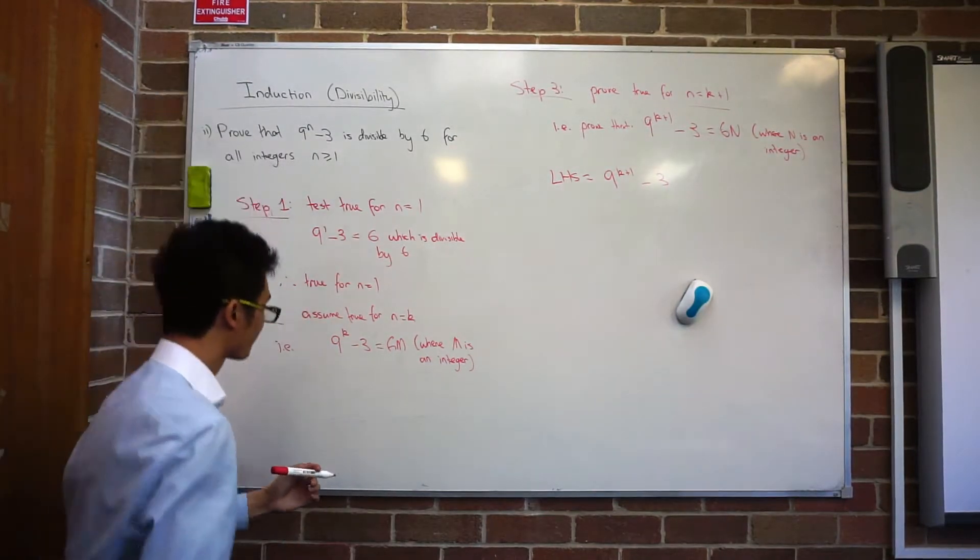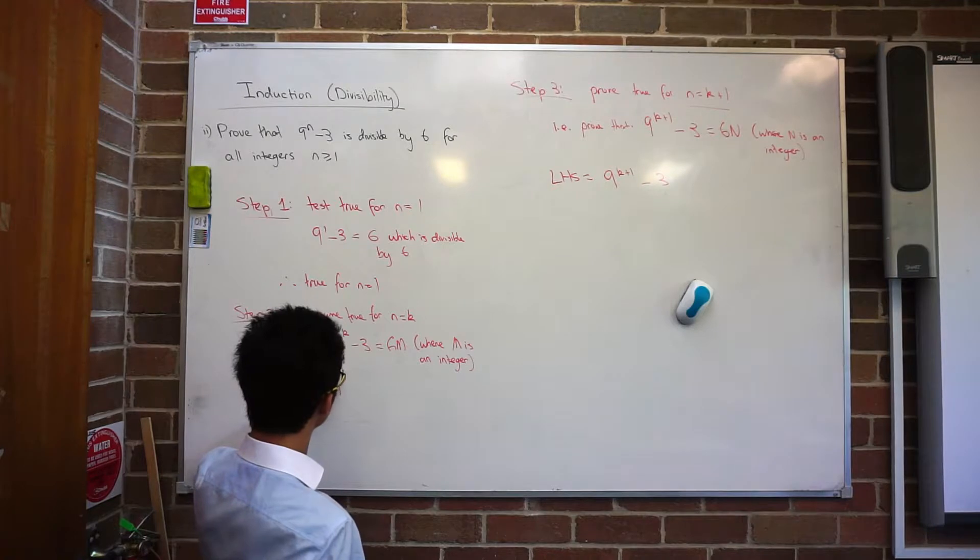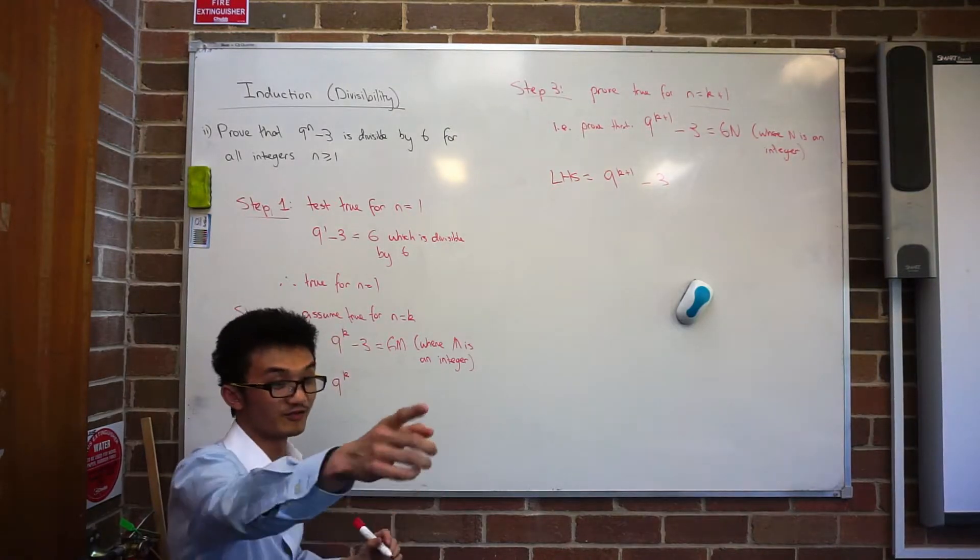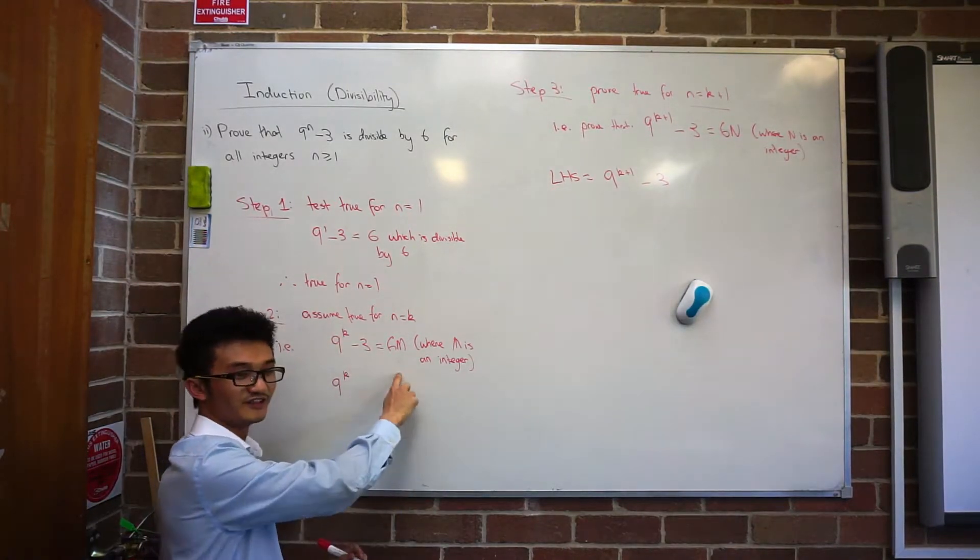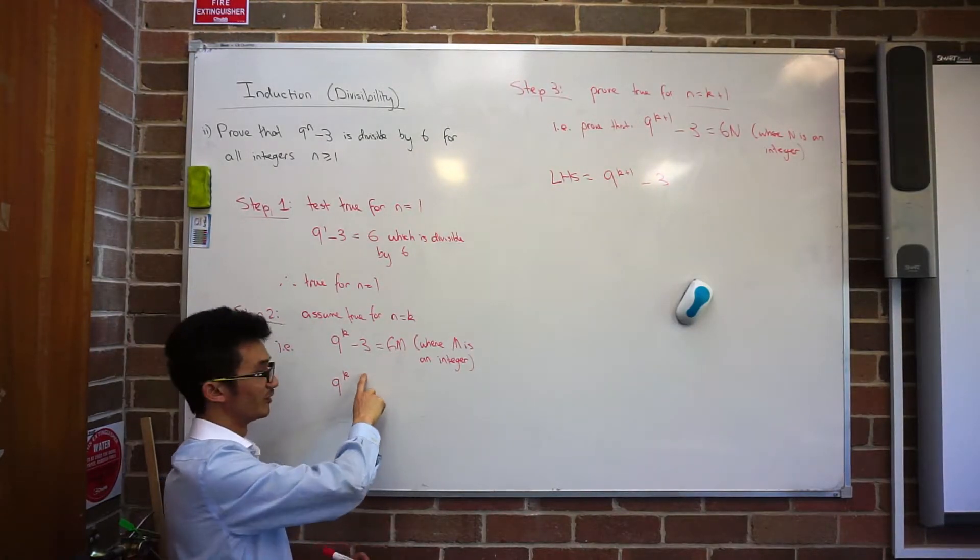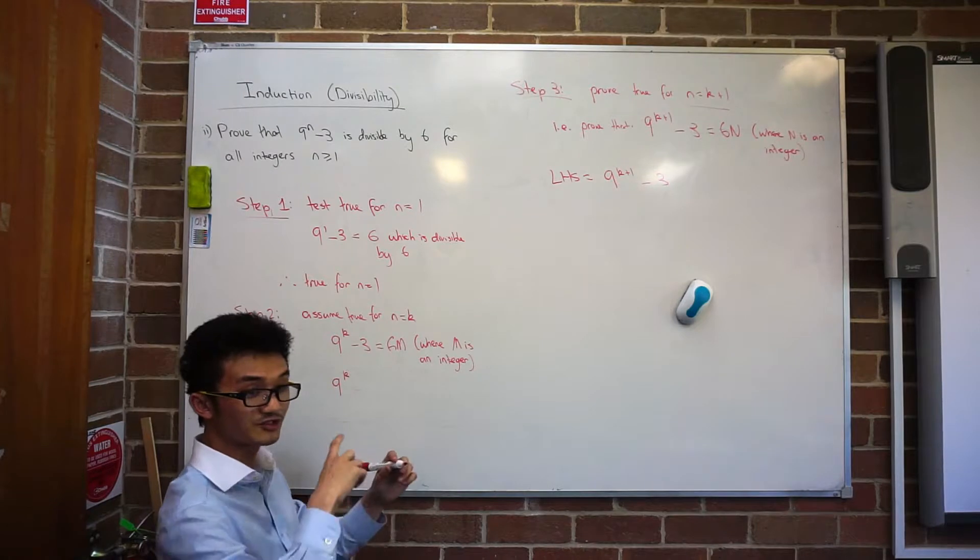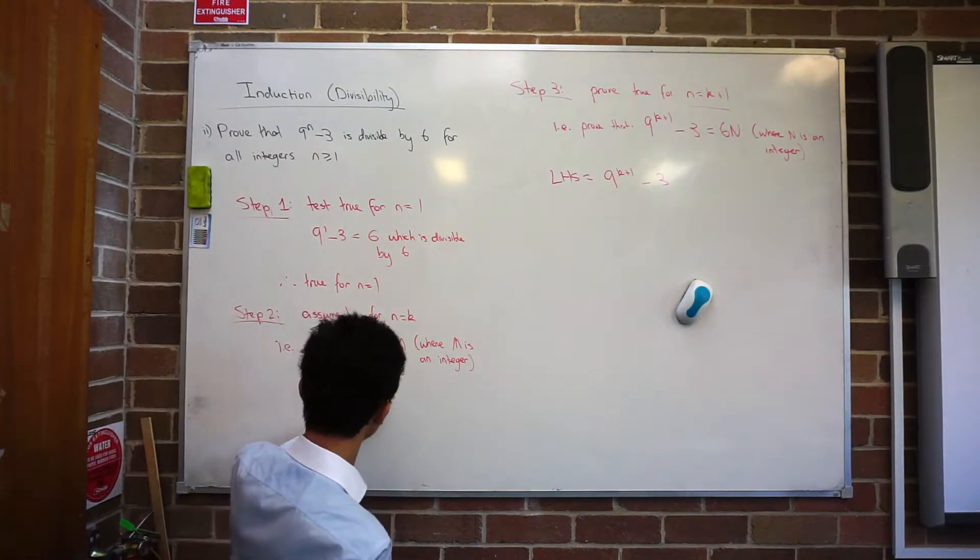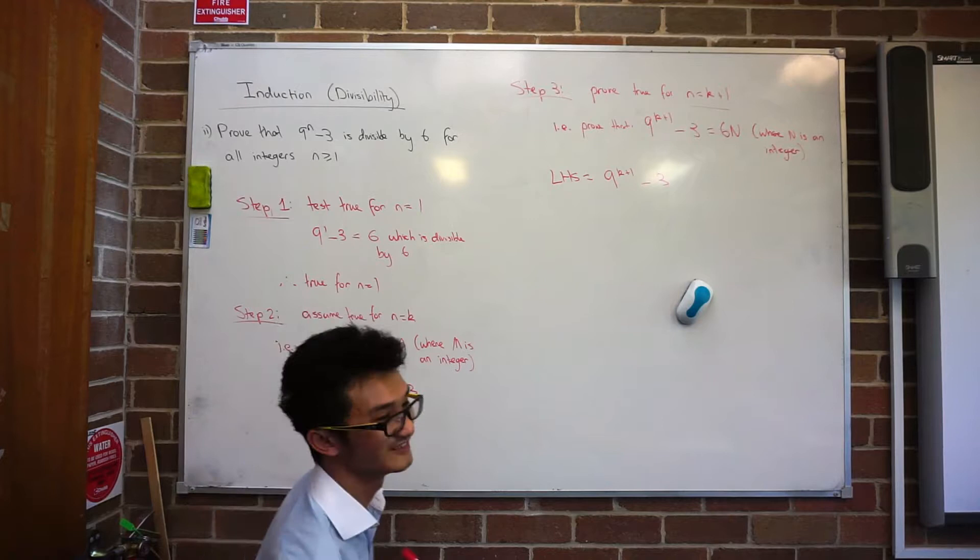You say 9 to the power plus 1 minus 9. Right. Before I do that though, remember over here, I have 9 to the k minus 3 equals to 6m. So 9 to the k equals 6m. I'm just going to rearrange it. So 9 to the k equals to 6m. I'm not going to make that same mistake. Plus 3.